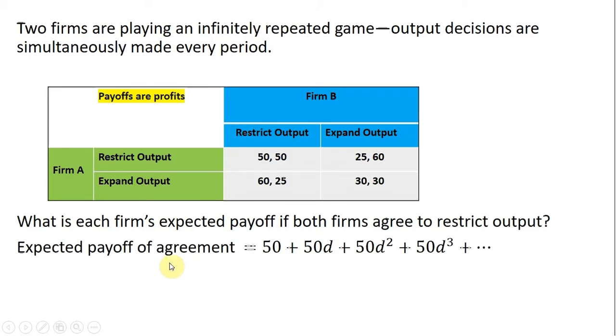The expected payoff of the agreement, then, of agreeing to restrict output is going to look like this, where right now each firm would get $50 of profit. One year from now, it would be 50 times D. Two years from now, 50 times D squared, and so on, where the D represents the discount rate.